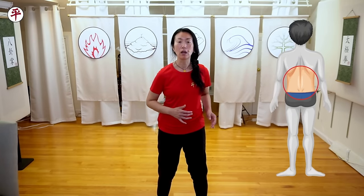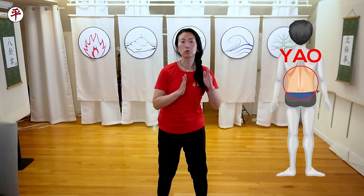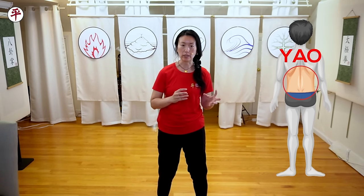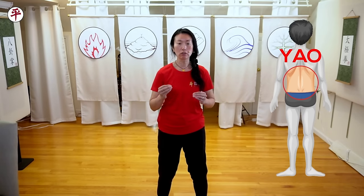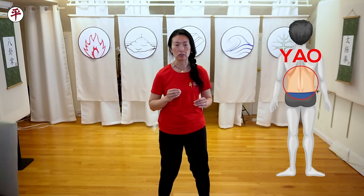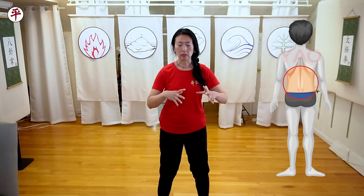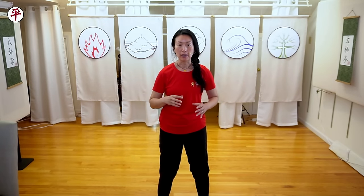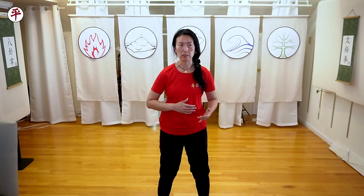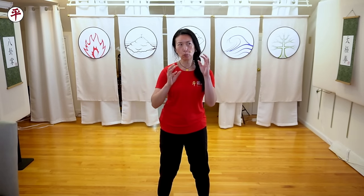The other area we're going to talk about today is yau. Yau is usually translated in English as waist, so you'll hear — especially when you read about Tai Chi — that your yau controls the movements. That translates into English as your waist controls the movements. But what yau represents in Chinese and what waist represents in English are kind of different.